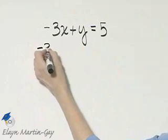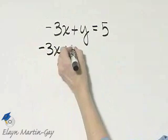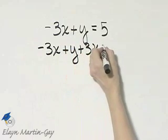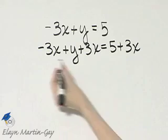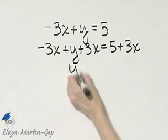I'll take the left side and I'll add 3x, and I'll take the right side and I'll add 3x. And notice here on the left side I have simply y then.